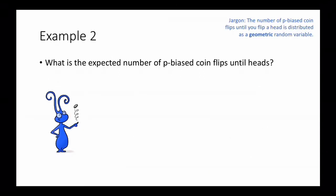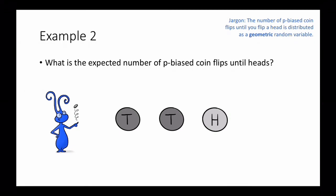Let's move on to example 2, which you might have seen before. The question is: what is the expected number of p-biased coin flips until you flip a head? Suppose I'm flipping coins — first flip tails, second flip tails, third flip heads — then the value of my random variable is 3. This is called a geometric random variable. We can calculate its expected value by writing out the definition of expectation and taking a big nasty sum, but we can also do it very slickly with linearity of expectation.